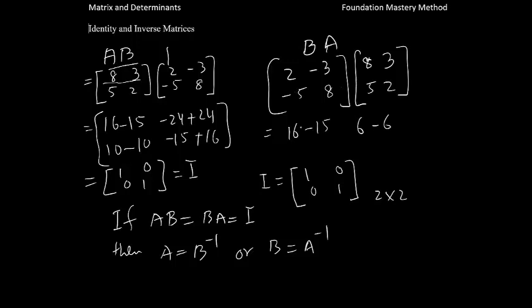And then negative 5 times 8 is negative 40. Negative 5 times 3 is negative 15, 8 times 2 is 16. So when you simplify, you can see again, it is 1, 0, 0, 1. This is also identity. So that fulfills this condition. So the given matrices are inverse to each other.